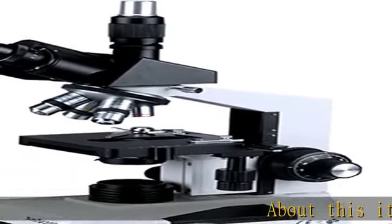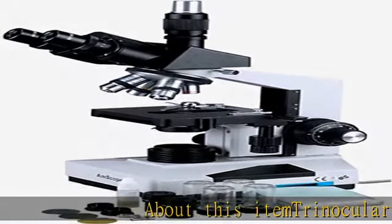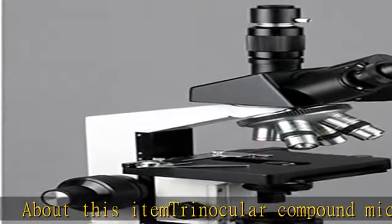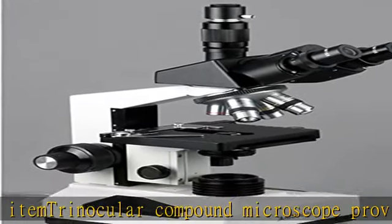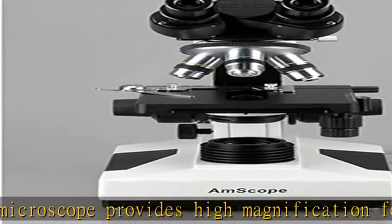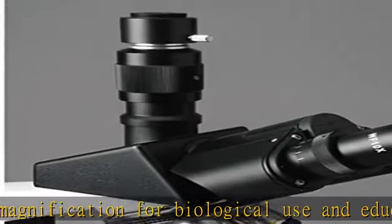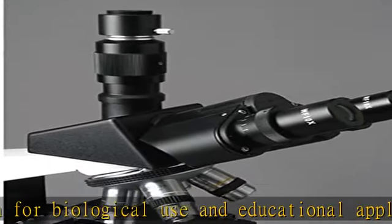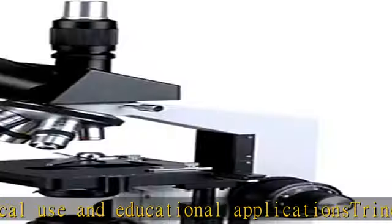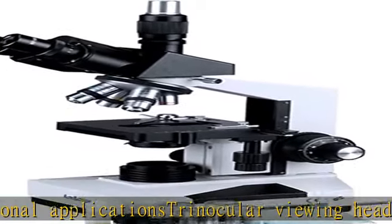About this item: Trinocular Compound Microscope provides high magnification for biological use and educational applications. Trinocular viewing head with vertical camera mount and simultaneous binocular mount with pair of 10x wide field eyepieces and sliding head with 55 to 75mm interpupillary adjustment, fixed 30 degree vertical inclination to reduce eye and neck strain.